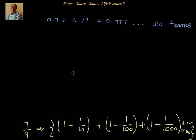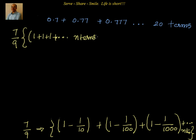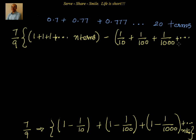Now we separate the two parts. The ones: 1 + 1 + 1 + ... for n terms gives simply n. Then we subtract the geometric progression part: 1/10 + 1/100 + 1/1000 + ... up to n terms. So the expression is 7/9 times [n minus the sum of that geometric progression].